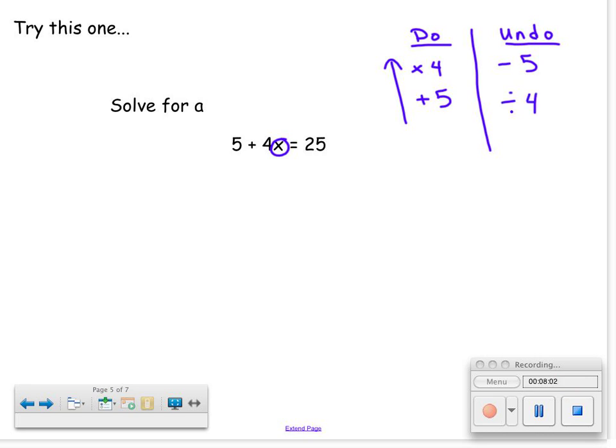What you do to one side, you must do to the other. So let's do that. I subtract 5, so I locate the 5, subtract it, but I also do it to the right side. That gives me 4 times x equals 20. So I took care of the minus 5. Now I divide by 4.